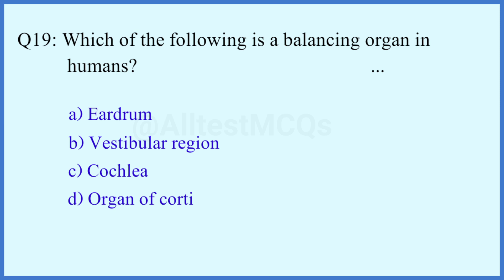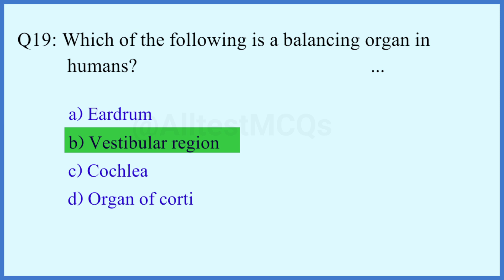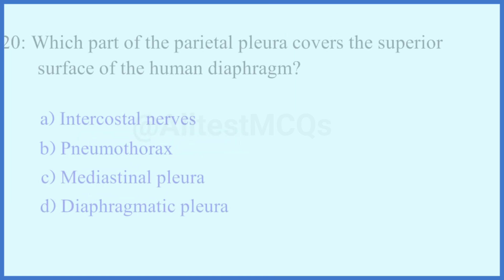Question number 19. Which of the following is a balancing organ in humans? The right answer is option B: Vestibular region.